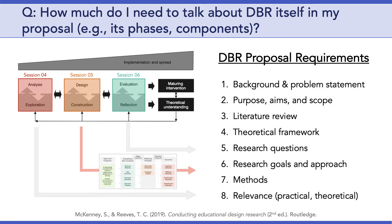The first question asks: how much do I need to talk about DBR itself in my proposal — its phases, its components, and so on? Well, the answer is not much. You can assume an educated readership that is familiar with education design research. Just like when writing up the results of an experiment, researchers don't need to explain what an experiment is — they only need to explain why that particular research approach is appropriate for answering the study's research questions. In addition, because DBR is a meta-methodology, your methods section will be talking about whatever methods you need to answer questions related to your design conjectures and your theoretical conjectures. I'll be talking a bit more about this in a few slides.